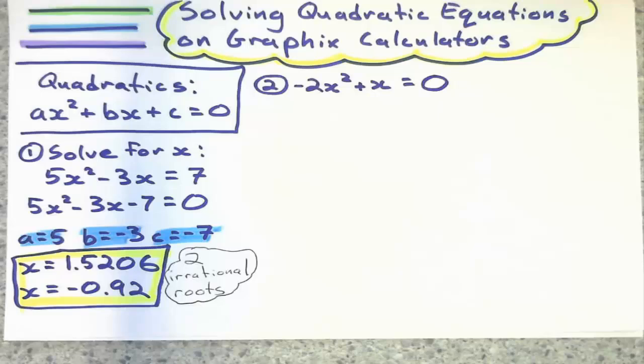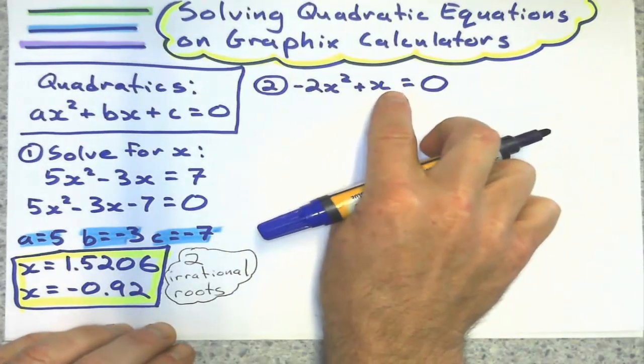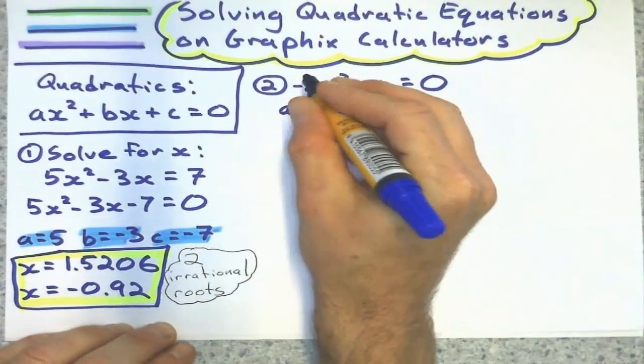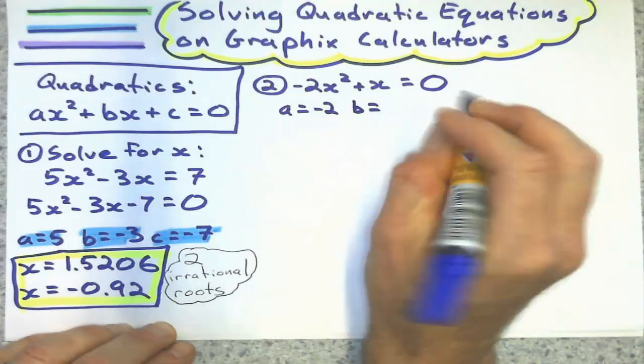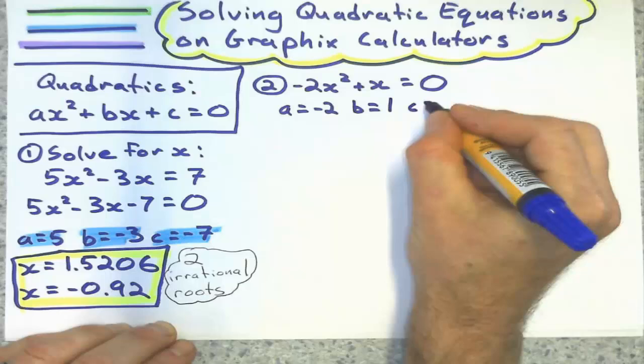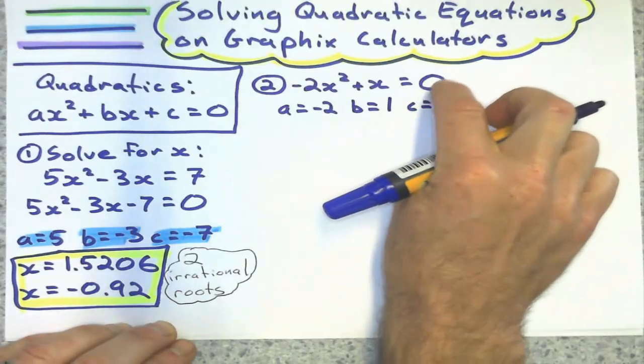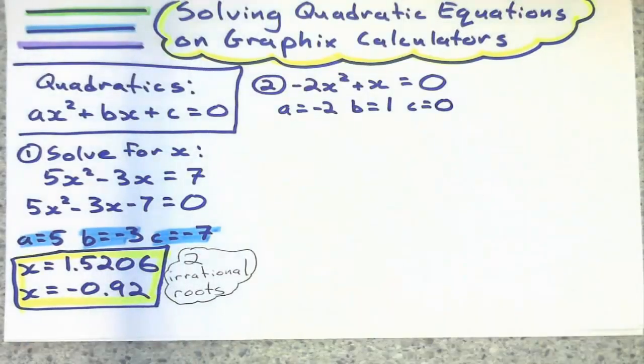So let's look at another one. Suppose I have this one. It doesn't look like I have a constant term there. So, the A coefficient is negative 2. The B coefficient, there's an imaginary 1 right there. And the C coefficient, that's not the C term. There is no constant term, so C is 0.